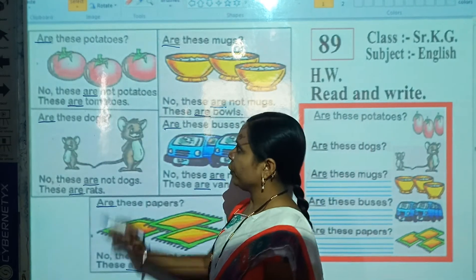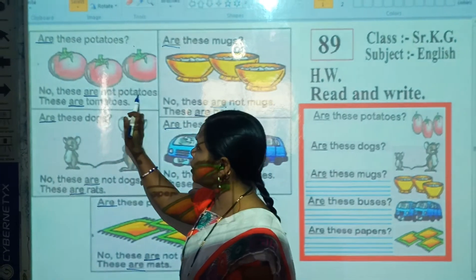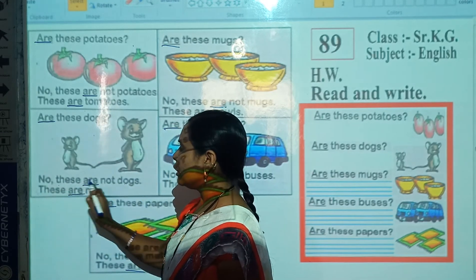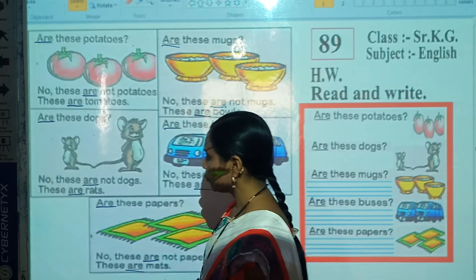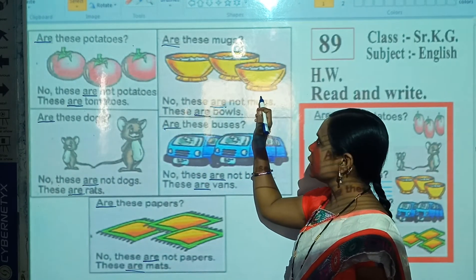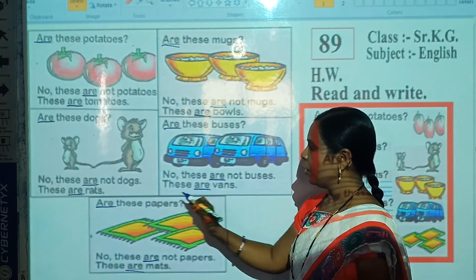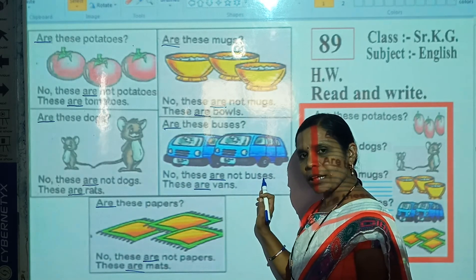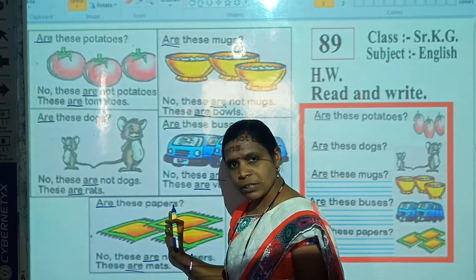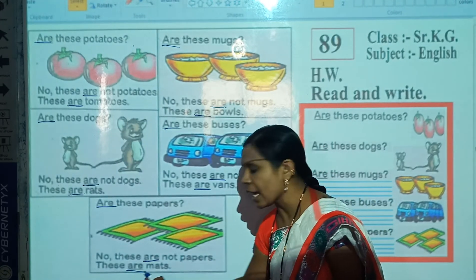Once again, read after me. Are these potatoes? No, these are not potatoes. These are tomatoes. Are these dogs? No, these are not dogs. These are rats. Are these mugs? No, these are not mugs. These are bowls. Are these buses? No, these are not buses. These are fans. Are these papers? No, these are not papers. These are masks.